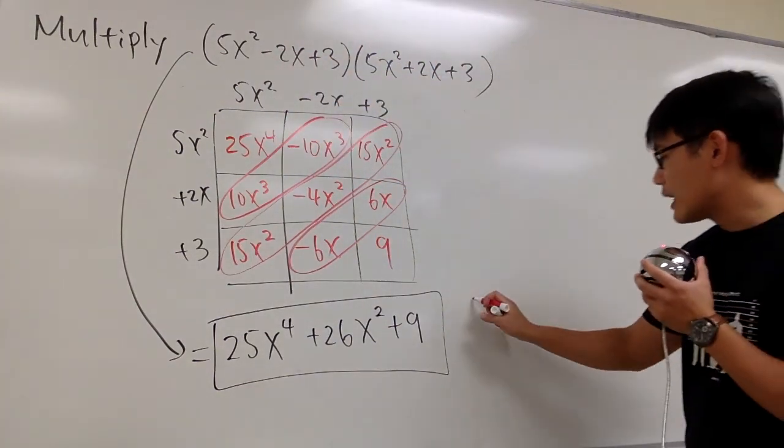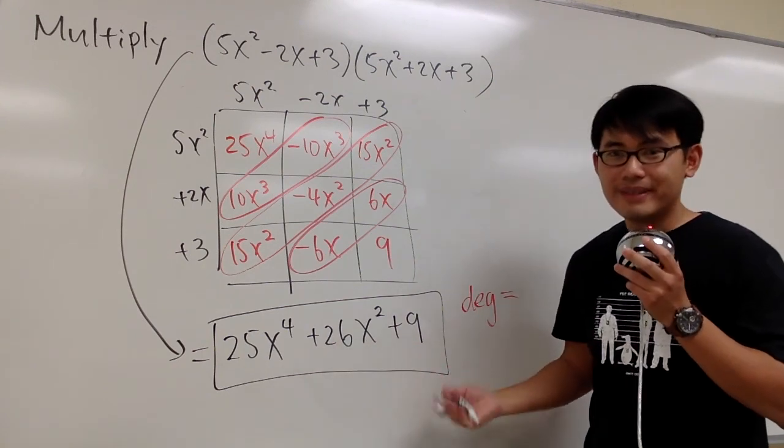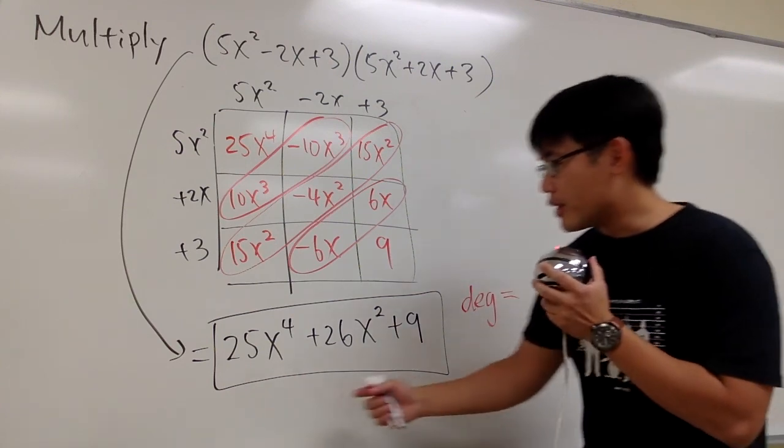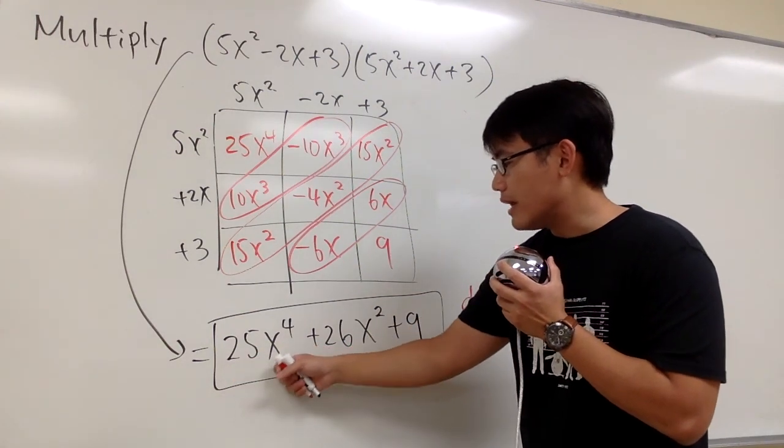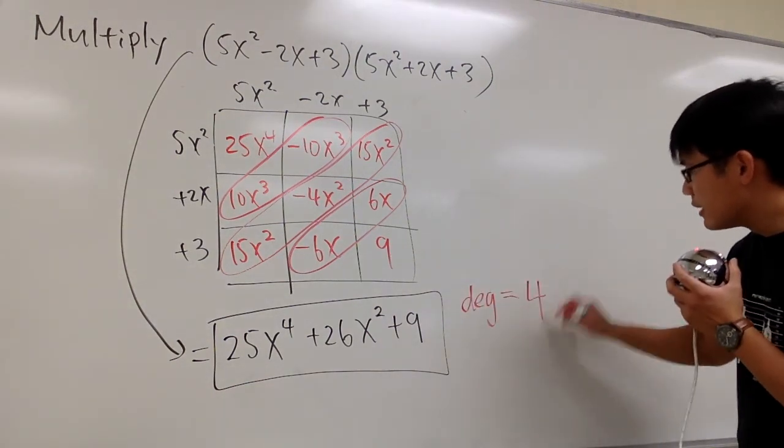And let's also do a quick check on the vocabulary. What's the degree of this resulting polynomial? Once again, the degree is the highest power of x in the term. So as we can see on the first term, we have x to the fourth power. So the degree of this polynomial is 4.